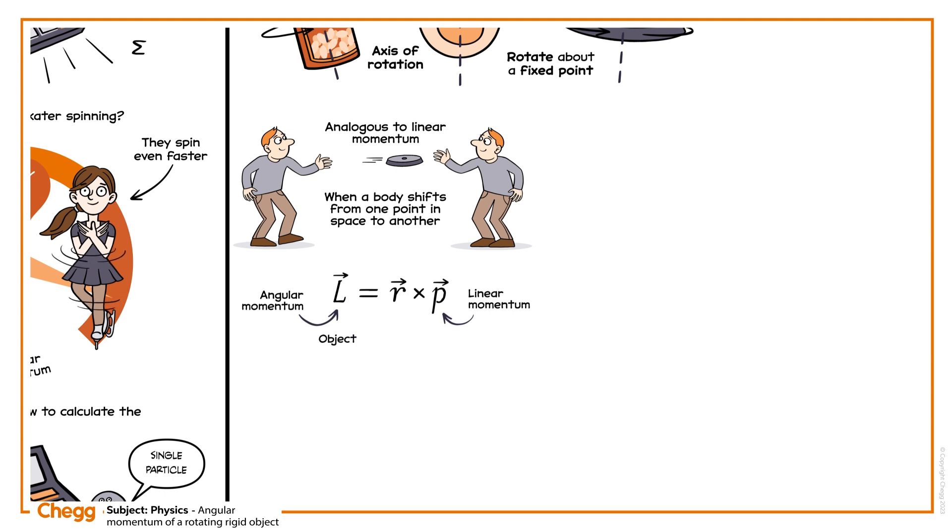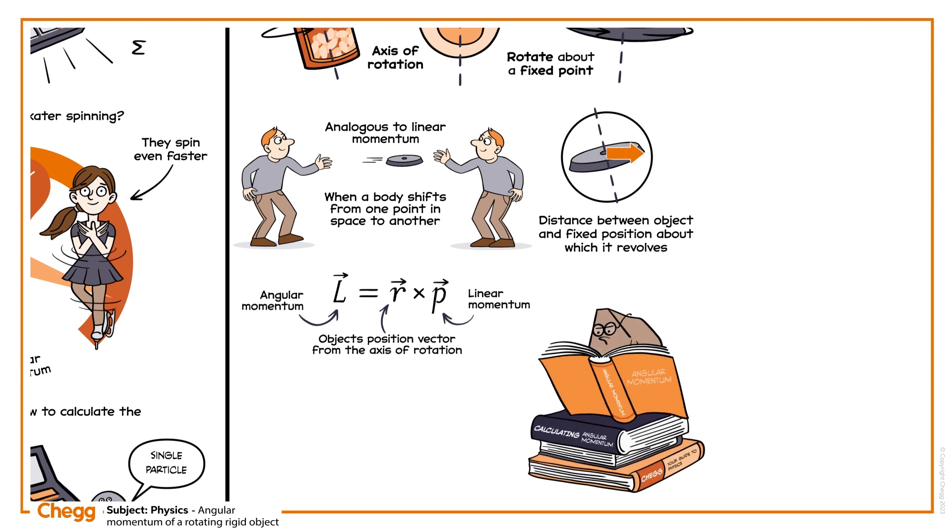Here vector R is the object's position vector from the axis of rotation. In other words, the distance between the object and the fixed point about which it revolves. So this equation tells us that angular momentum is defined as the cross-product of the distance of the object from a rotational axis and the linear momentum.